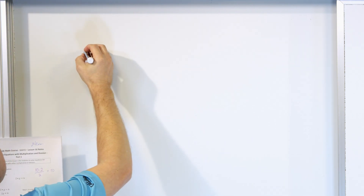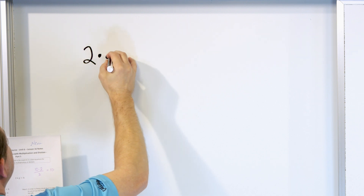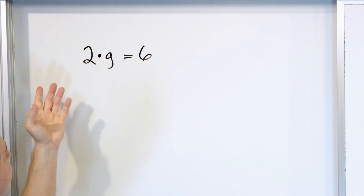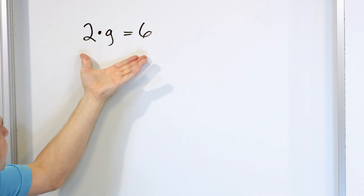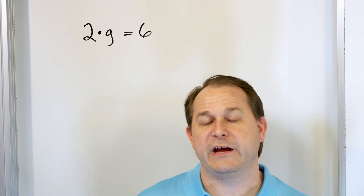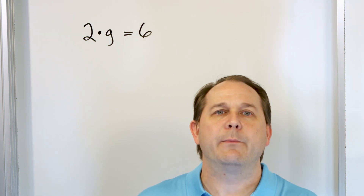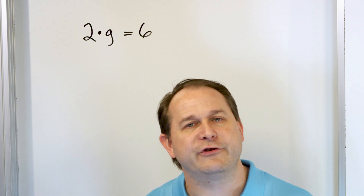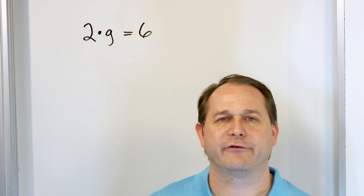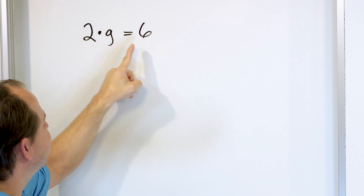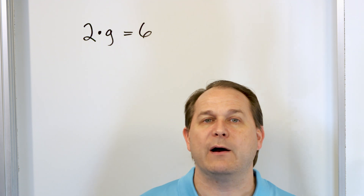Let's look at the first one. Let's say that our first equation is 2 times g is equal to 6. What would be a practical real-life example? This might be something like if I told you 2 times the number of golf balls in your house is equal to 6 golf balls — how many golf balls do you have? Or if you were to double the number of golf balls in your house, you would have 6. If g is the number of golf balls, if I double it I get 6, and I'm trying to figure out what g is.